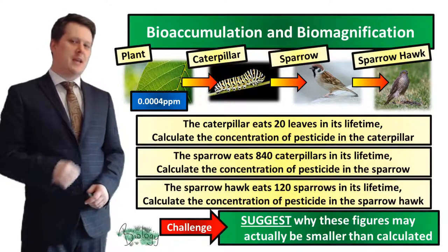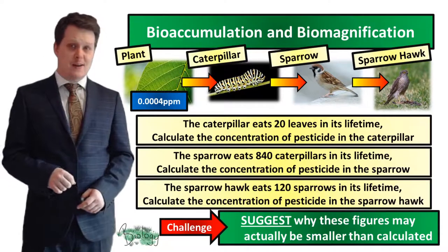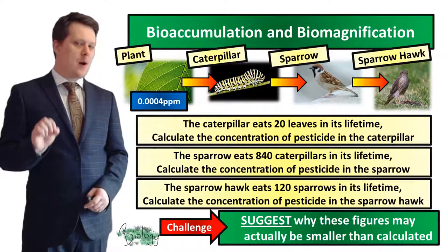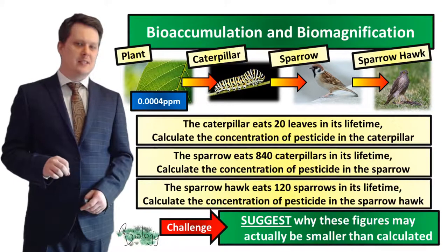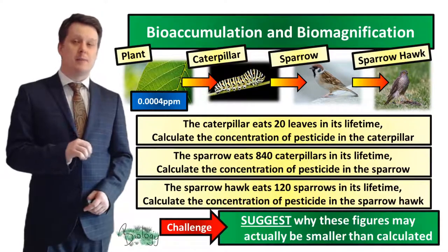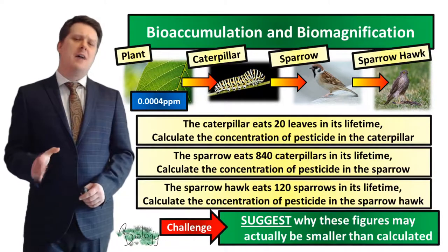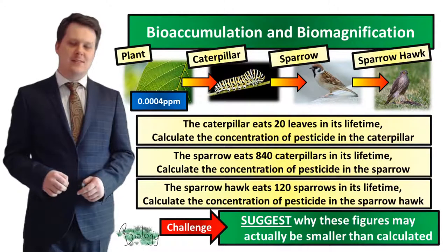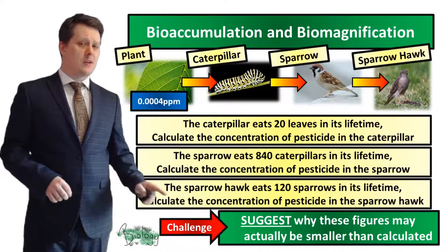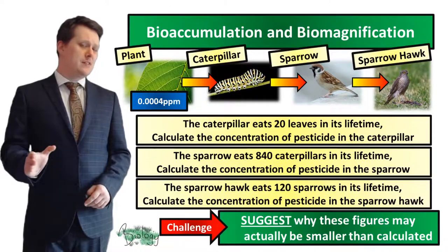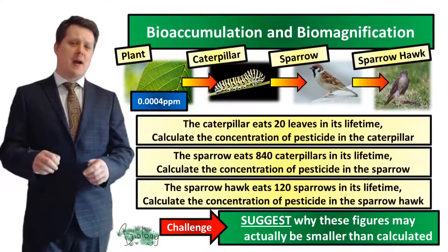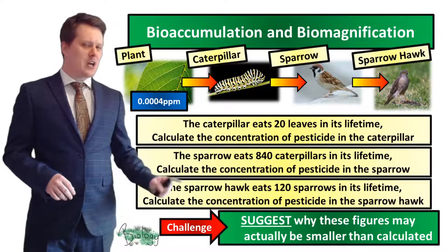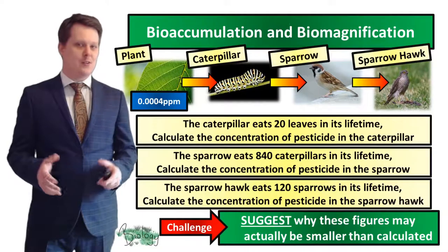For our next task, we're going to use our food chain. You can see there's a concentration of pesticide on our plant of 0.0004 parts per million. I want to know: if the caterpillar eats 20 leaves in its lifetime, how many parts per million will our caterpillar have consumed? After that, calculate how many parts per million the sparrow would eat if it ate 840 caterpillars in its lifetime. And finally, how many parts per million would our sparrowhawk consume if it ate 120 sparrows in its lifetime? If you really want a challenge, also suggest why these figures may actually be smaller than the ones you calculate.